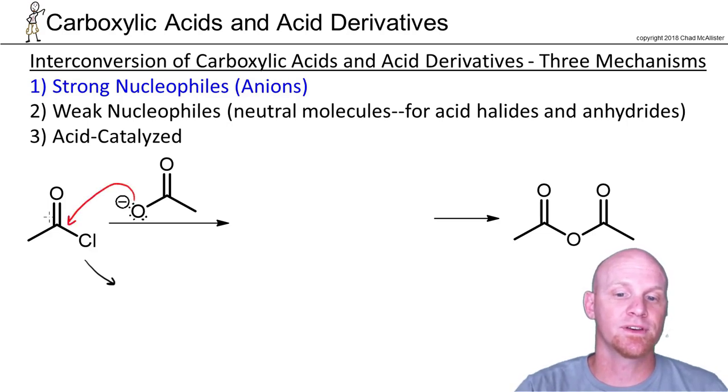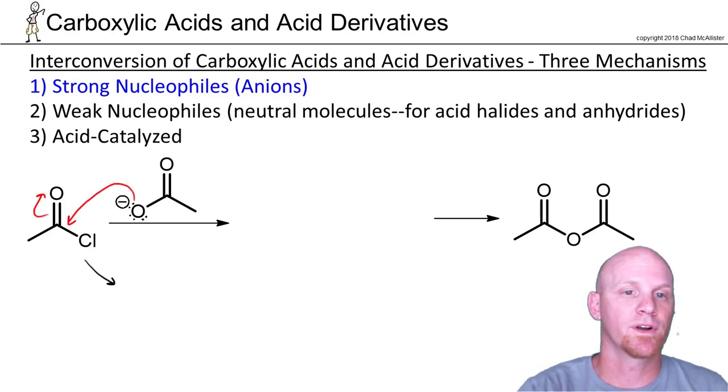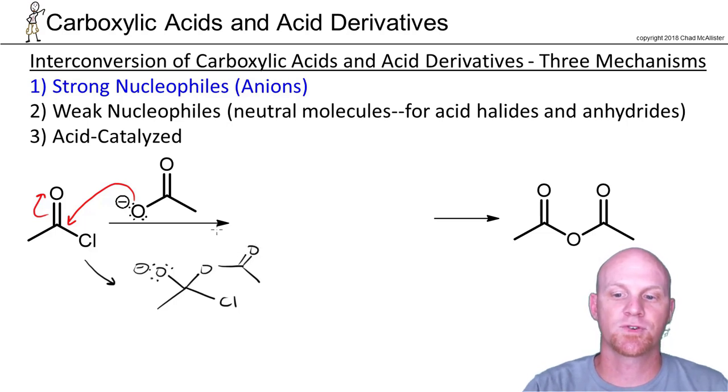And the first step is simply nucleophilic attack. And we're going to form a tetrahedral intermediate here. So we've got the chlorine still attached. Now I've got this oxygen out here, the negative charge. And then we've attached this group right here.